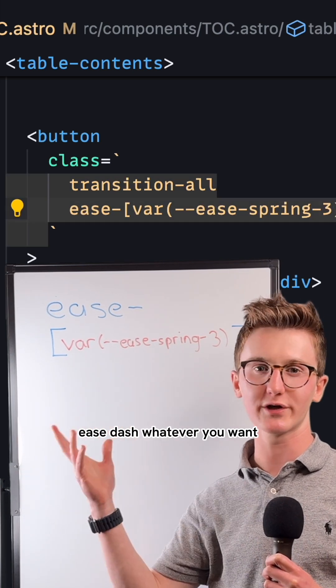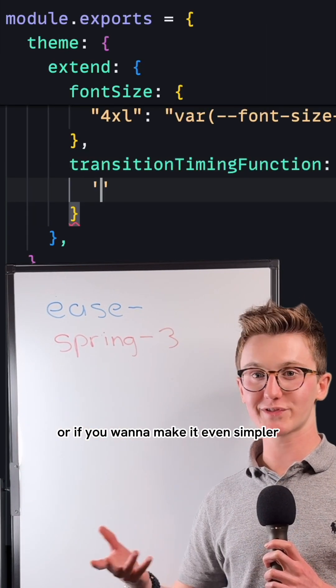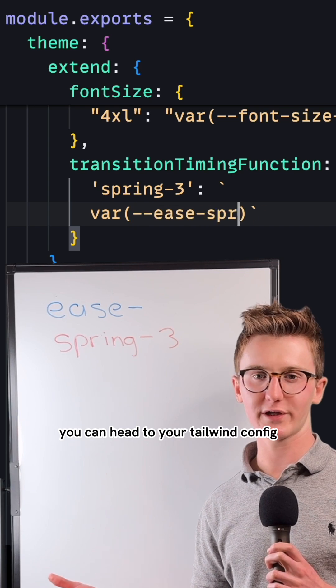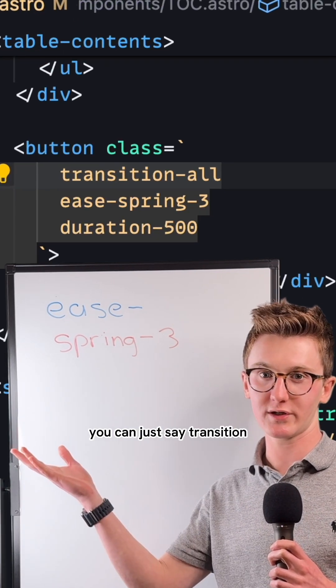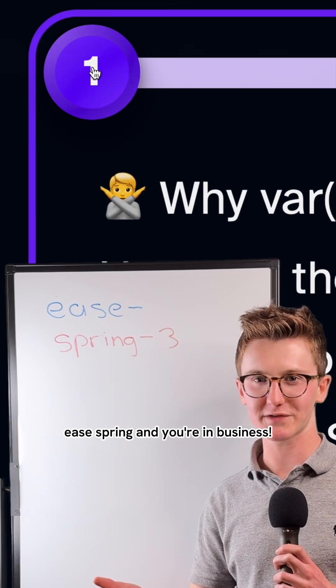You'd write something like ease-dash-whatever you want. Or if you want to make it even simpler, you can head to your Tailwind config and set up some classes. You can just say transition ease-spring, and you're in business.